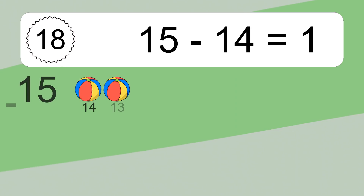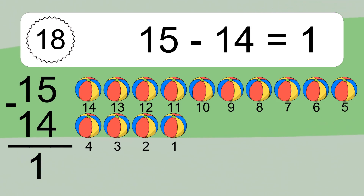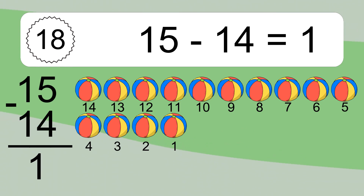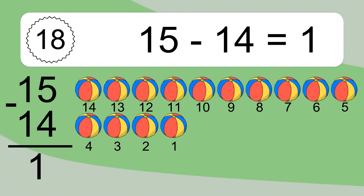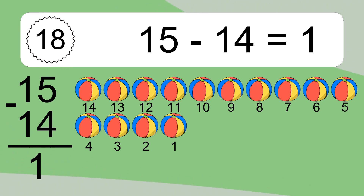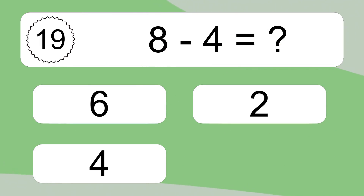15 minus 14 equals 1. Let's count it: 14, 13, 12, 11, 10, 9, 8, 7, 6, 5, 4, 3, 2, 1. 8 minus 4 equals what?